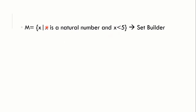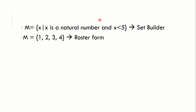Here x represents all the elements of the set, and x less than 5 means we look at natural numbers starting from 1, 2, 3, 4 — so the set has 4 elements. In roster form this would be {1, 2, 3, 4}. The set builder method is rarely used in basic problems; mostly the roster form is used because it is easy to understand.